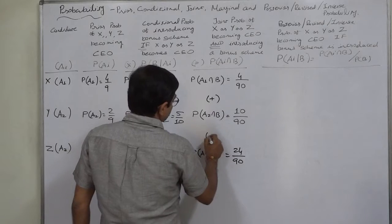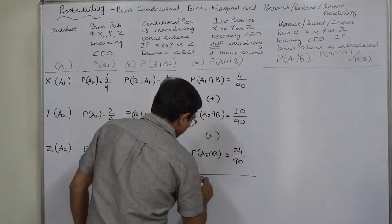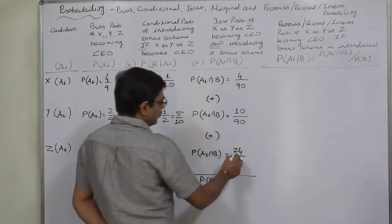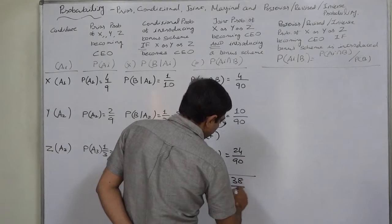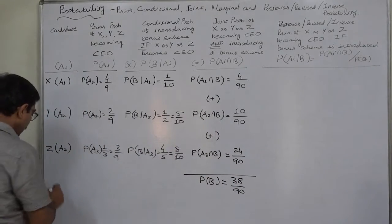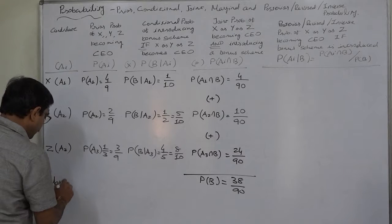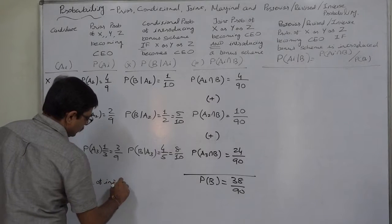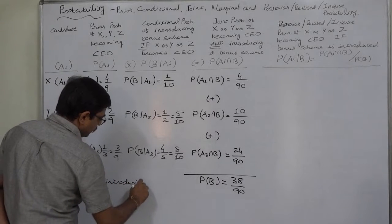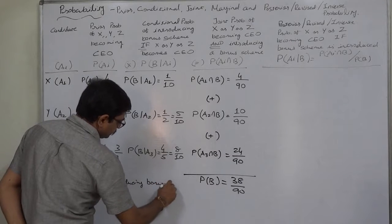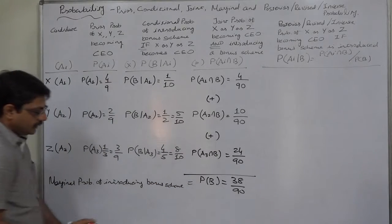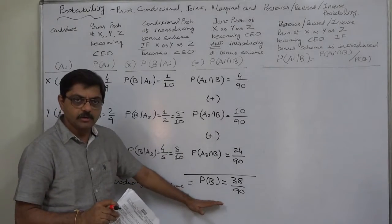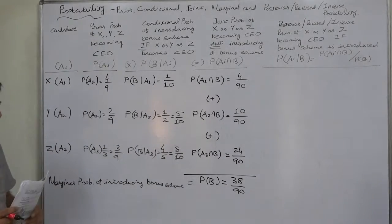If we add these three joint probabilities, the result will be P(B) — that is, the probability of introducing a bonus scheme irrespective of the candidate. That is 38 by 90. I am not going to simplify this. This is the marginal probability of introducing the bonus scheme, P(B). Whoever becomes CEO, the probability of introducing a bonus scheme in the organization comes to 38 by 90.